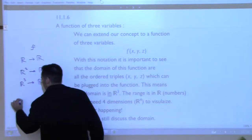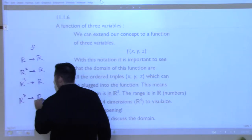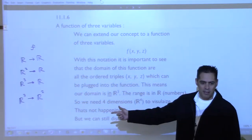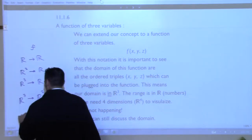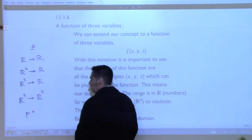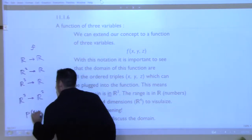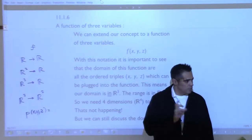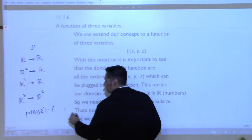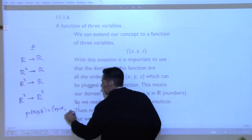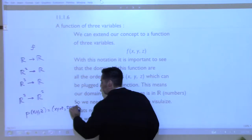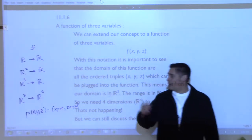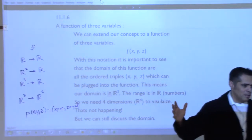You can go even further. How about taking in three numbers and spitting out two? Call it P of x, y, z — it takes in x, y, and z and spits out a point in two-dimensional space. For example: P(x,y,z) = (x, y+z, 2x − y + z²). That's a function from three-dimensional space into two-dimensional space. You'd need five dimensions to visualize it, which means it's not happening — you can't see it.